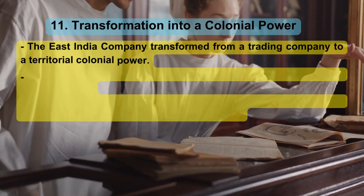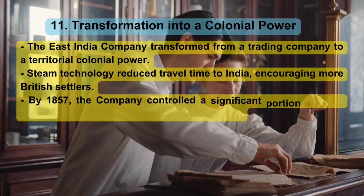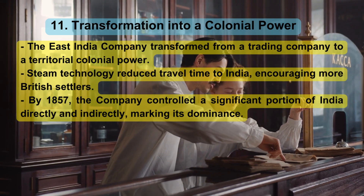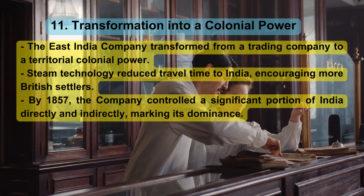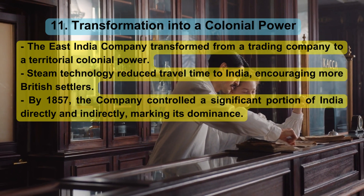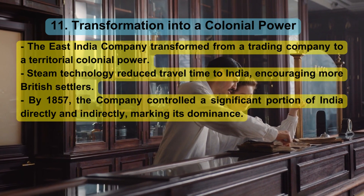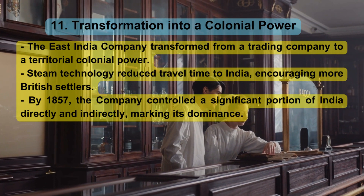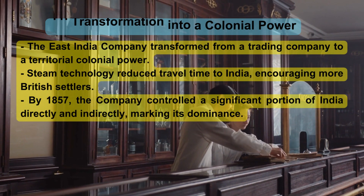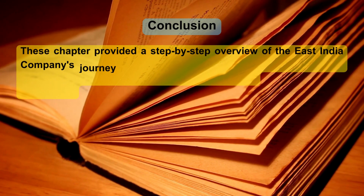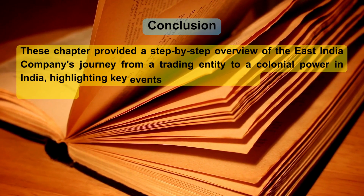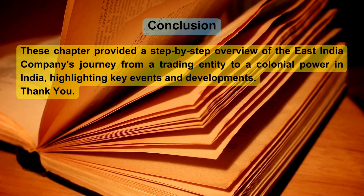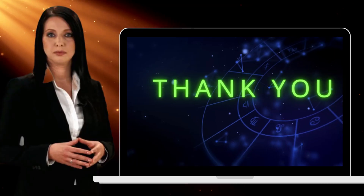Transformation into a Colonial Power. The East India Company transformed from a trading company to a territorial colonial power. Steam technology reduced travel time to India, encouraging more British settlers. By 1857, the company controlled a significant portion of India directly and indirectly, marking its dominance. This chapter provided a step-by-step overview of the East India Company's journey from a trading entity to a colonial power in India, highlighting key events and developments. Thank you.